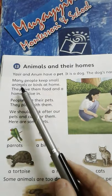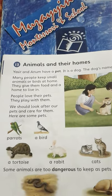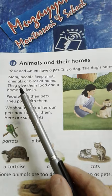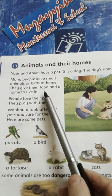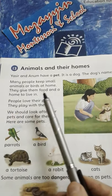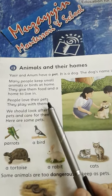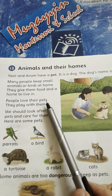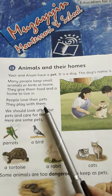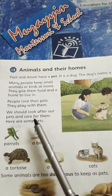Many people keep small animals or birds at home. Bohut sare log chote janwaron ko aur pareindu ko ghar pe rakhte hain. They give them food and a home to live in. People love their pets. They play with them. We should look after our pets and care for them.